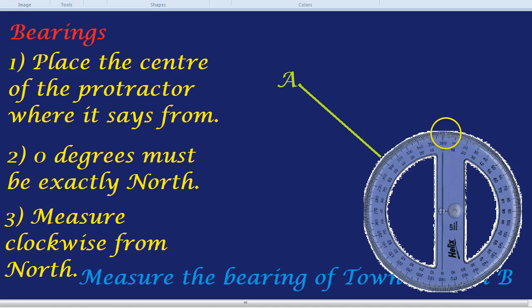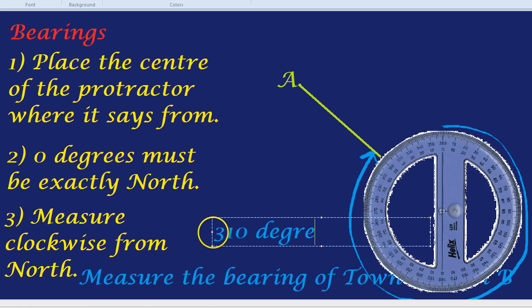So, using this 360 degree protractor, we're going to measure clockwise all the way round that long way because it has to be clockwise until we face A. And the angle is, it can't be 50, that would be the anticlockwise angle. So, it must be 310. So, the bearing of town A from town B is 310 degrees.